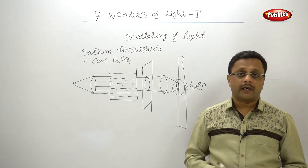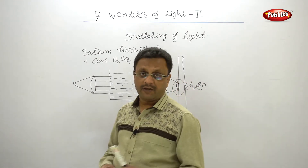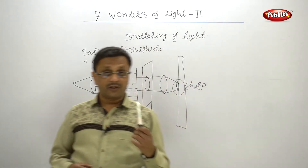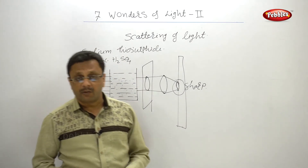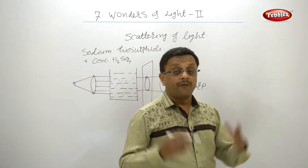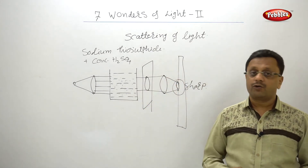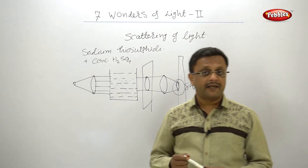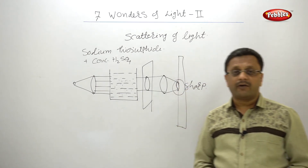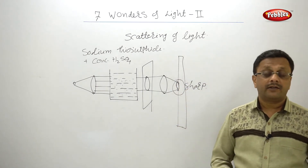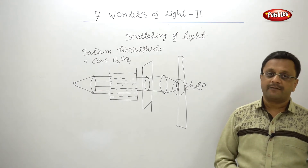We Indians must be proud that our great Indian scientist Dr. C.V. Raman announced his work on the scattering of light on 20th February 1928. For this phenomenon and great work, he received the Nobel Prize in 1930. That is why 20th February is celebrated as National Science Day in India.